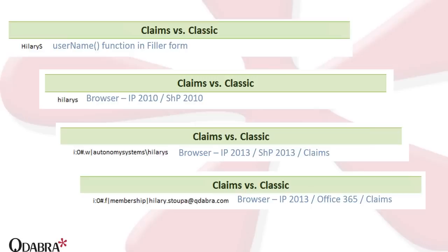XPath is case-sensitive, so 'HillaryS' and 'hillarys' are not the same thing. The third screenshot shows what's returned from the username function with a browser form in an on-premises SharePoint 2013 claims site. Opening the same form in Filler gives the top screenshot with caps, and in Browser gives that third screenshot. The fourth screenshot shows what we see in Office 365 — now we don't have a username match at all; you can see my email address there instead. This is a difference you want to be aware of when doing your form design.